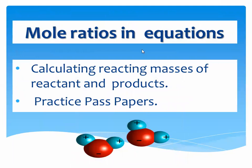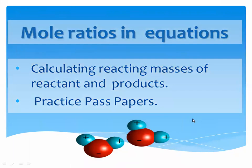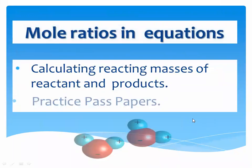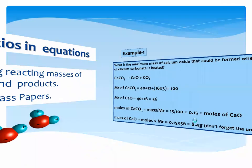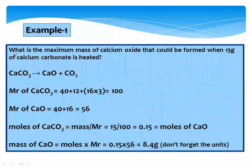Mole ratios in the calculation. Calculating reacting masses of reactant and product. Example number 1: What is the maximum mass of calcium oxide that could be formed when 15g of calcium carbonate is heated? First, we have to write down the equation and then balance the equation.